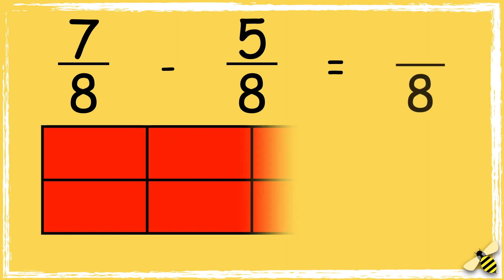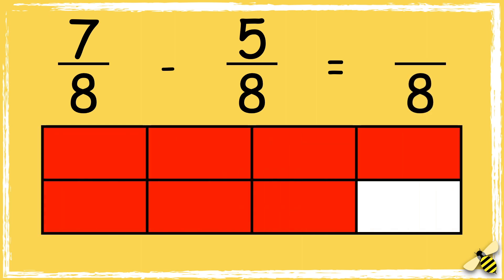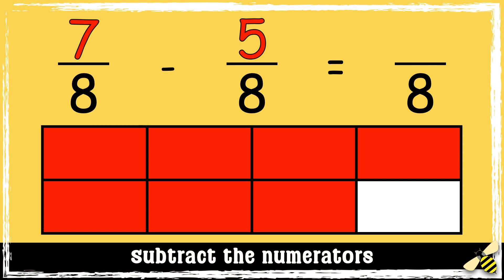Here is a calculation: 7 eighths take away 5 eighths. When we subtract fractions with the same denominator, the denominator stays the same. We only subtract the numerators.